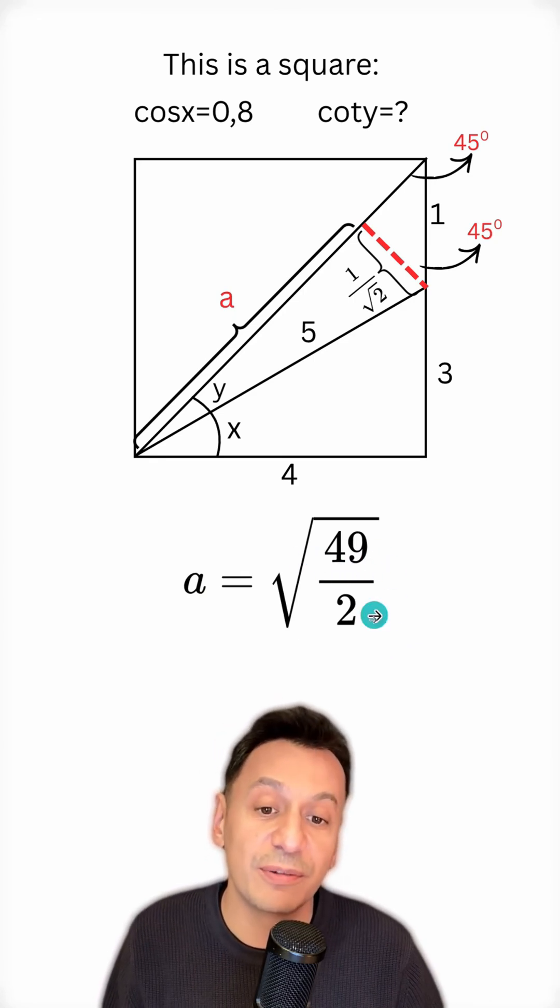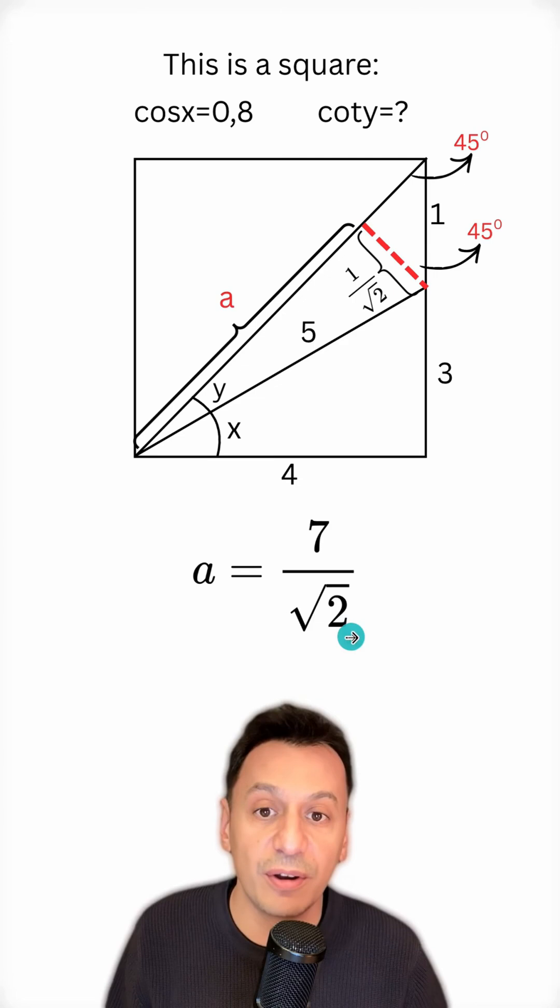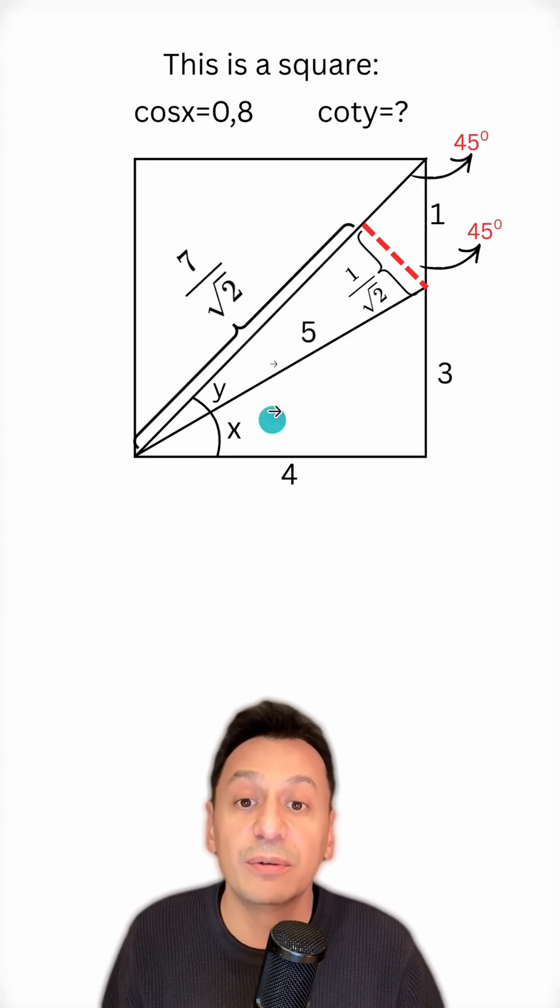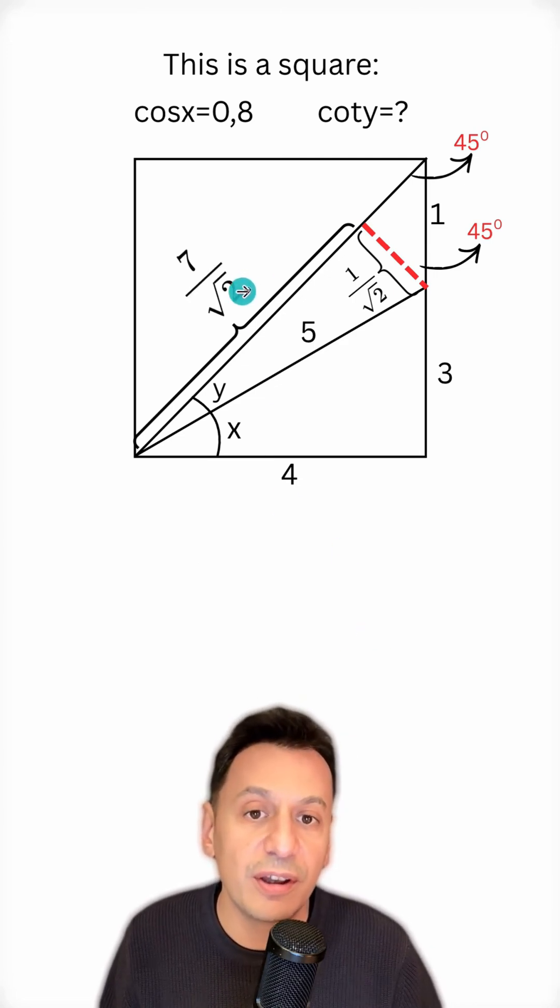49 comes out of the square root as 7, and root 2 I'll leave inside the root as well. Now that I've found a as 7 over root 2, let me substitute it here.